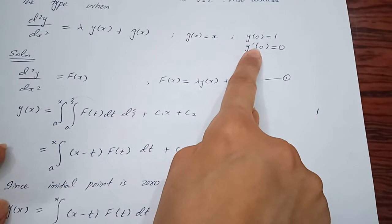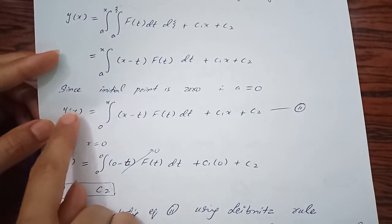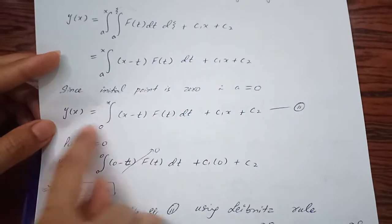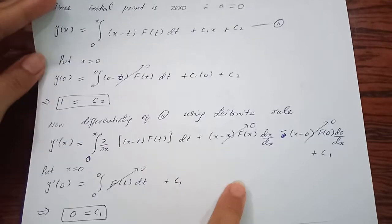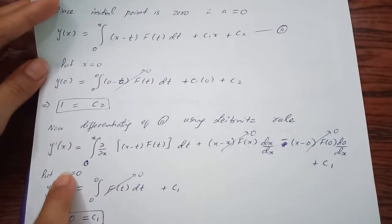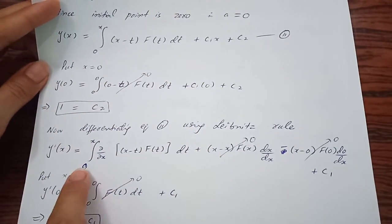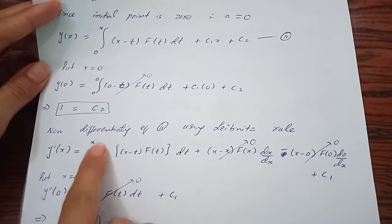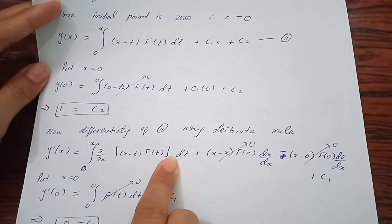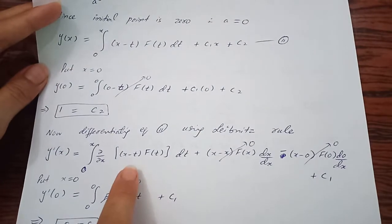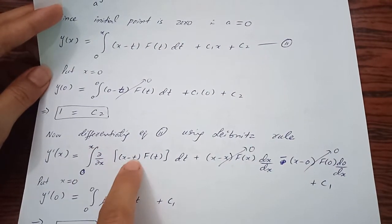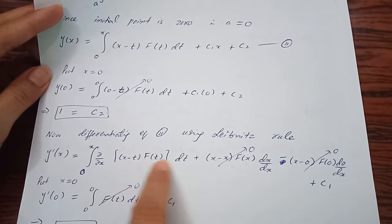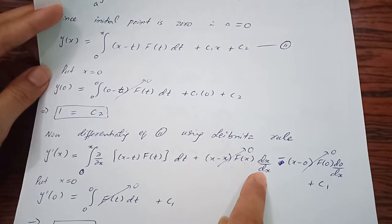Now consider equation 2. The second condition is on the derivative, so find its derivative using Leibniz rule. y'(x) = integral from 0 to x of ∂/∂x of this function dt, plus replacing t with the upper limit: (x-x)f(x) times derivative of upper limit with respect to x.